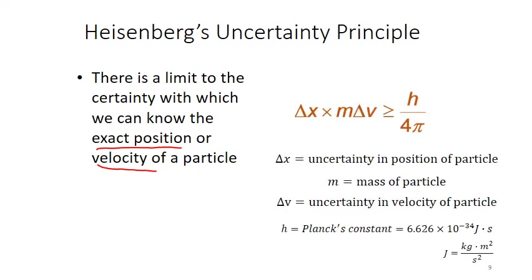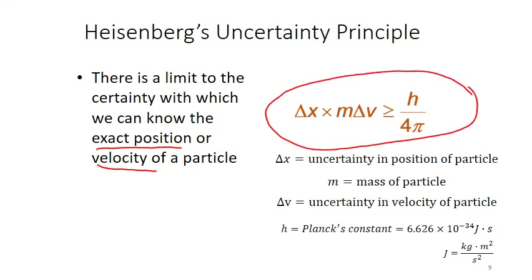Werner Heisenberg mathematically defined this complementary relationship through his uncertainty principle. His uncertainty principle states that there is a limit to the certainty with which we can observe either the exact position or the velocity of a particle. Position is an observation of particle-like nature, while velocity is associated with motion and represents wave nature. So to observe the position of an electron, for example, by making it collide with a photon in a laser beam, we have to disturb its velocity and therefore its wave-like motion. Mathematically, this is the statement of Heisenberg's uncertainty principle. The uncertainty in the position of the particle is represented by the term delta x — the larger this value, the less precisely we know the exact position of that particle. M is the mass of the particle.